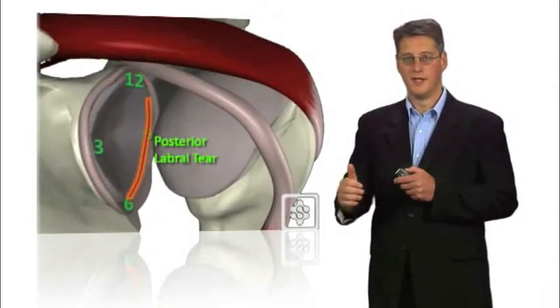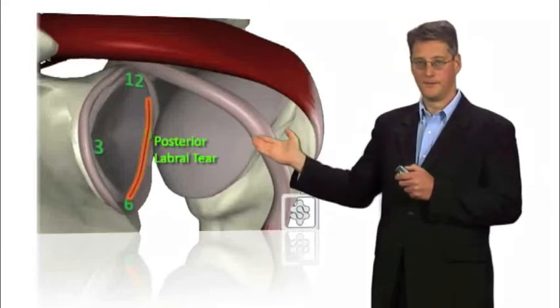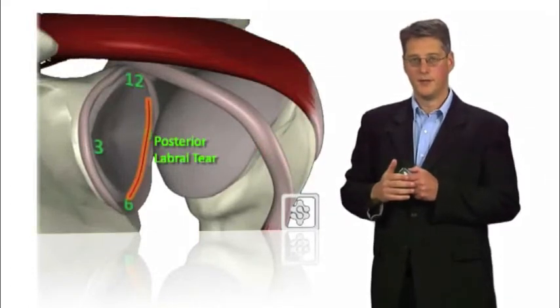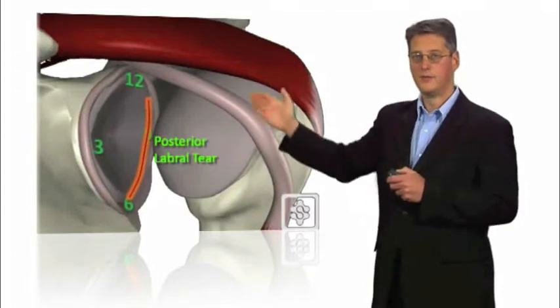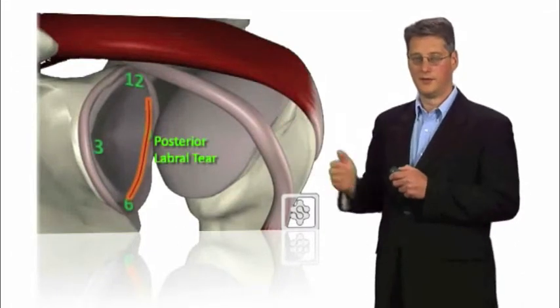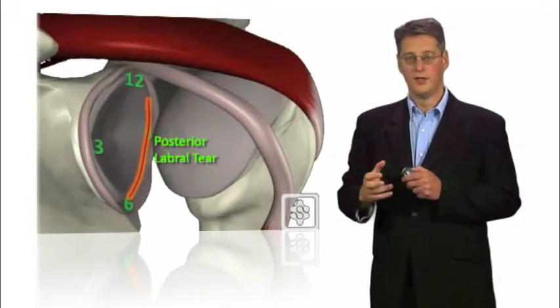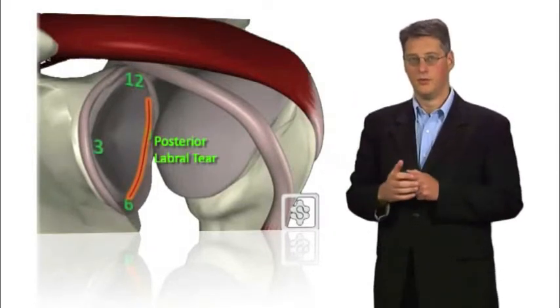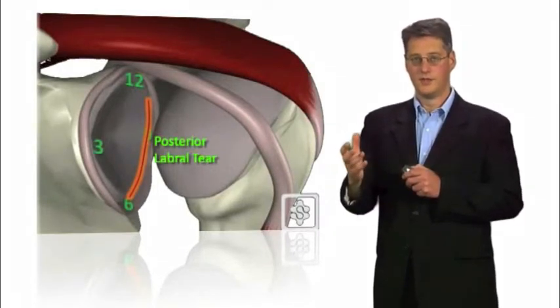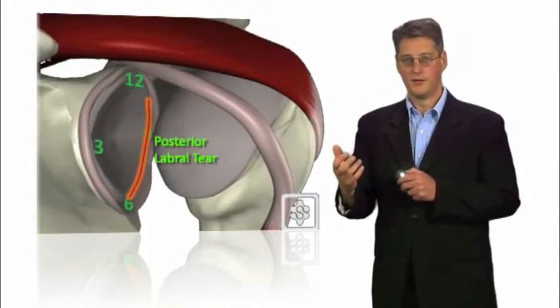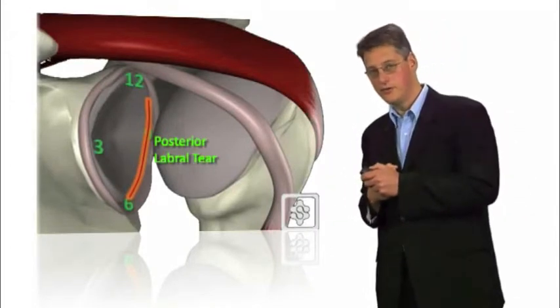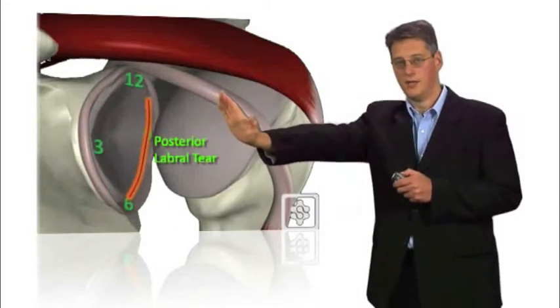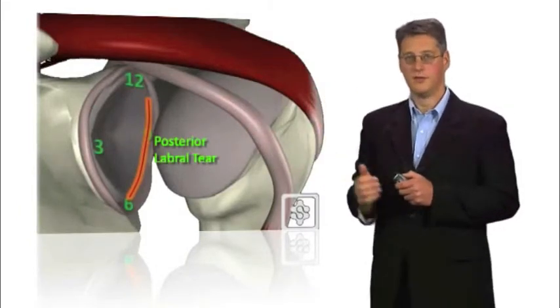You can also get tears at the back of the shoulder and these are known as posterior labral tears running from about twelve o'clock to nine o'clock. These occur with a dislocation or subluxation backwards of the shoulder joint. We see these sometimes with rugby players and direct falls onto the shoulder or onto the outstretched hand and the shoulder is knocked backwards.